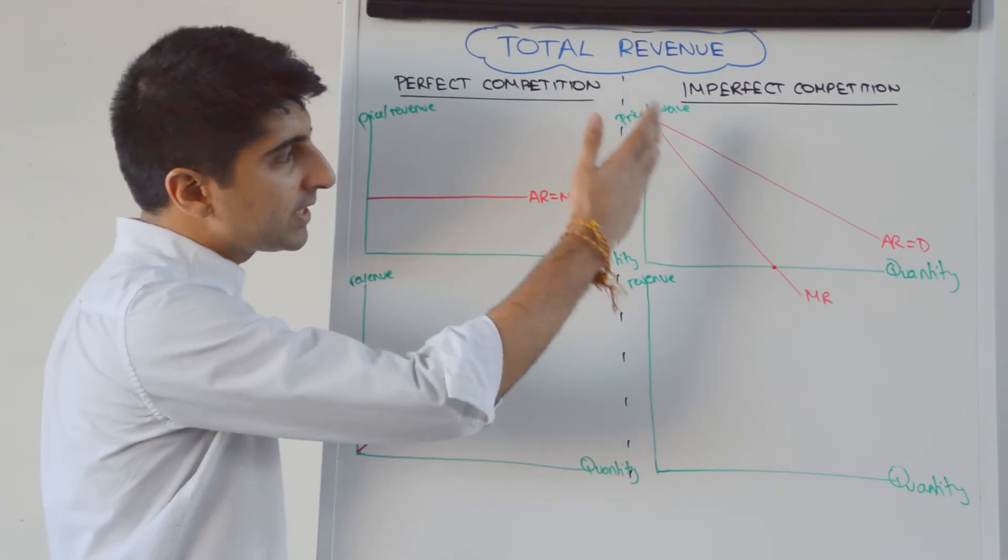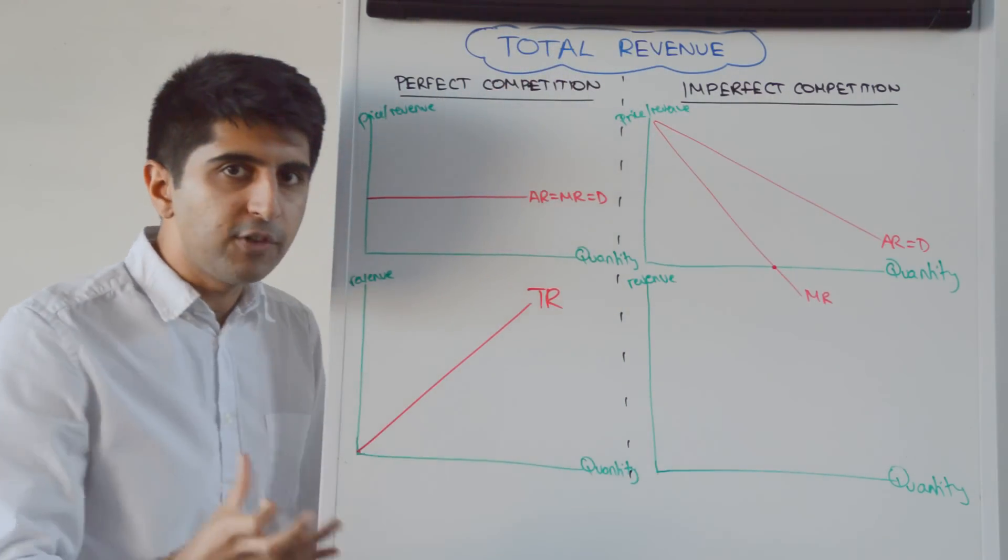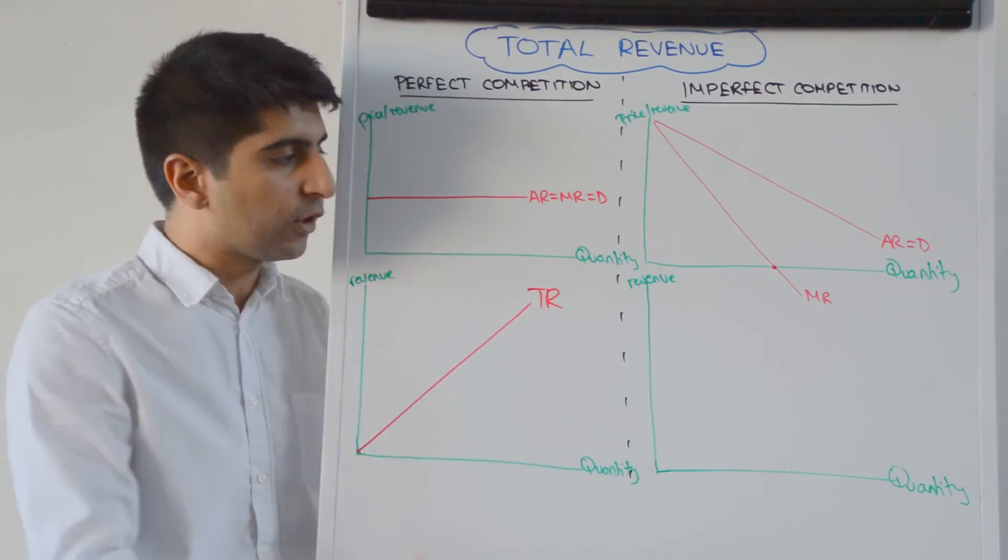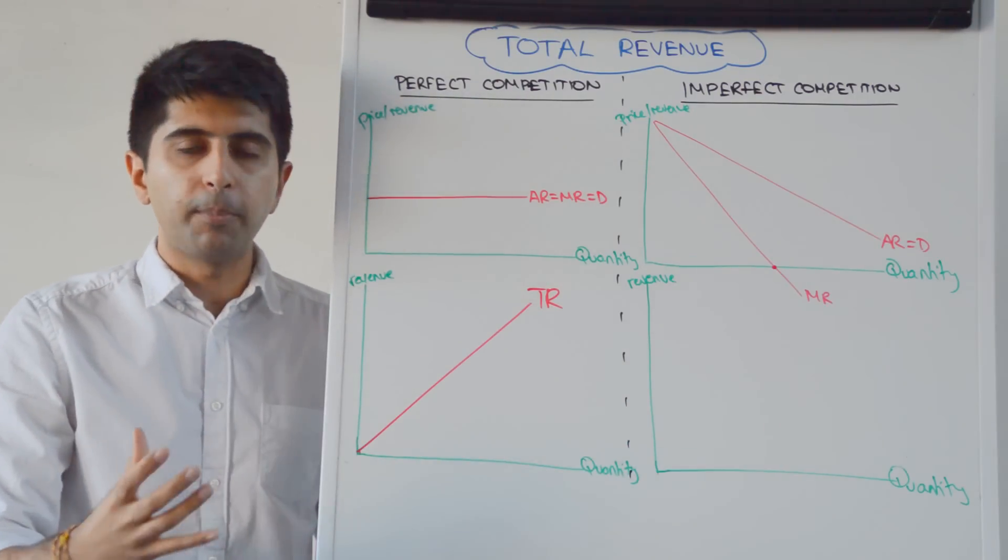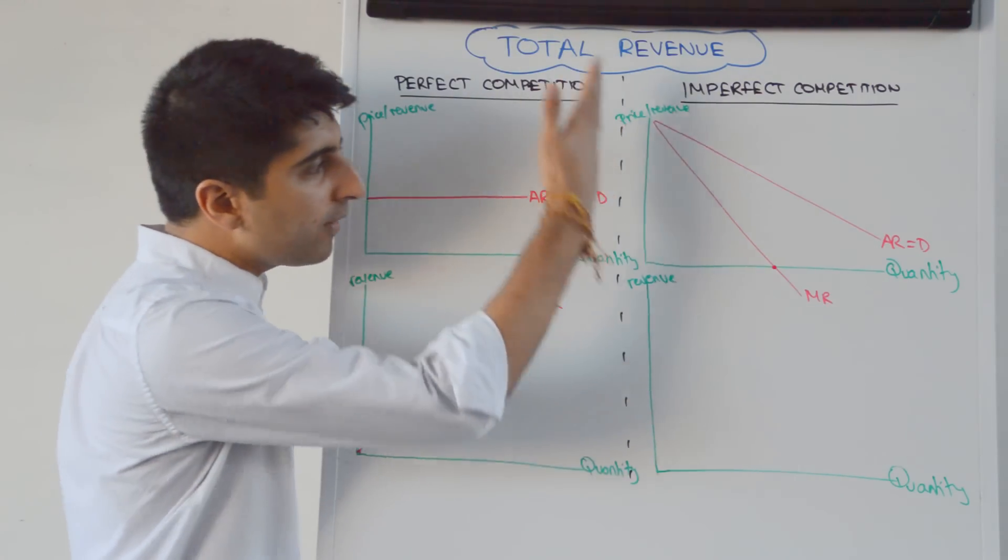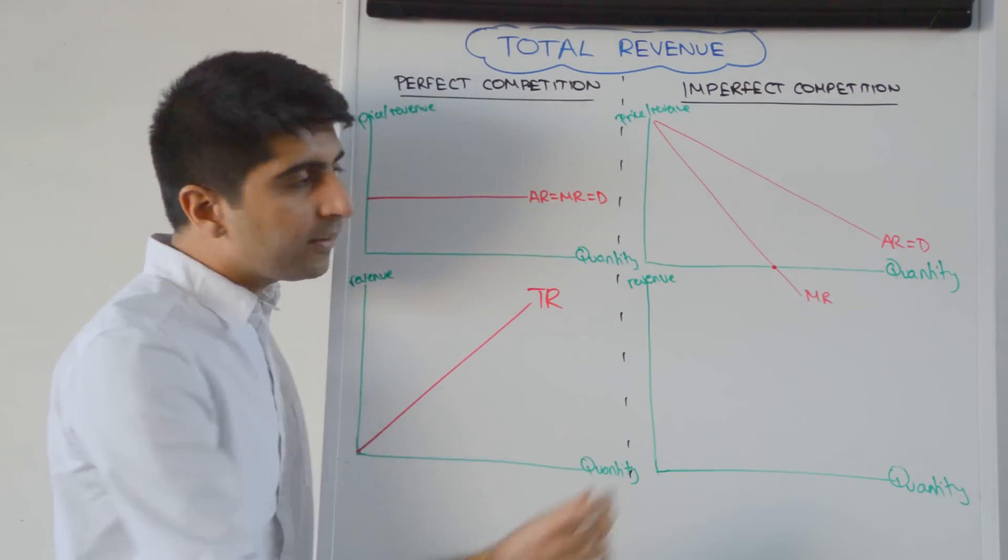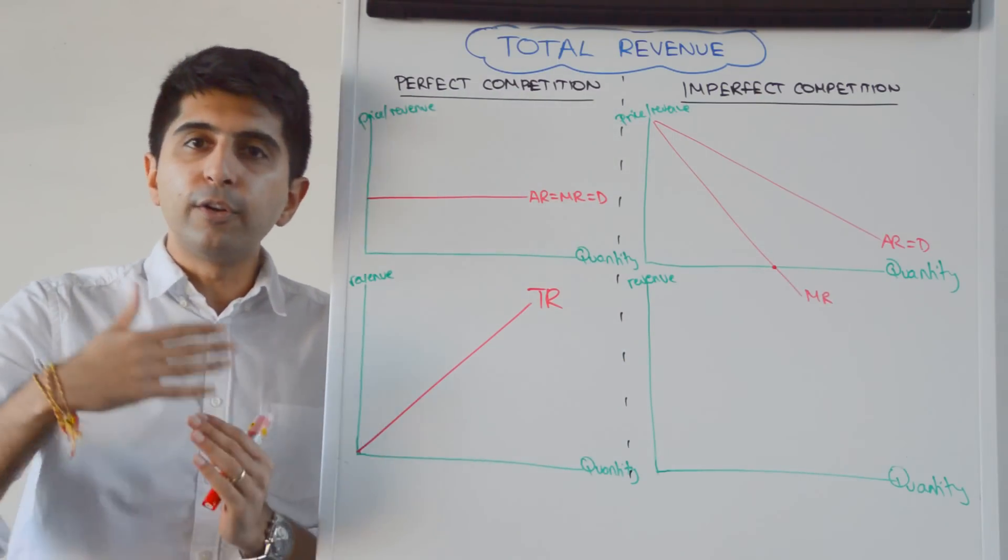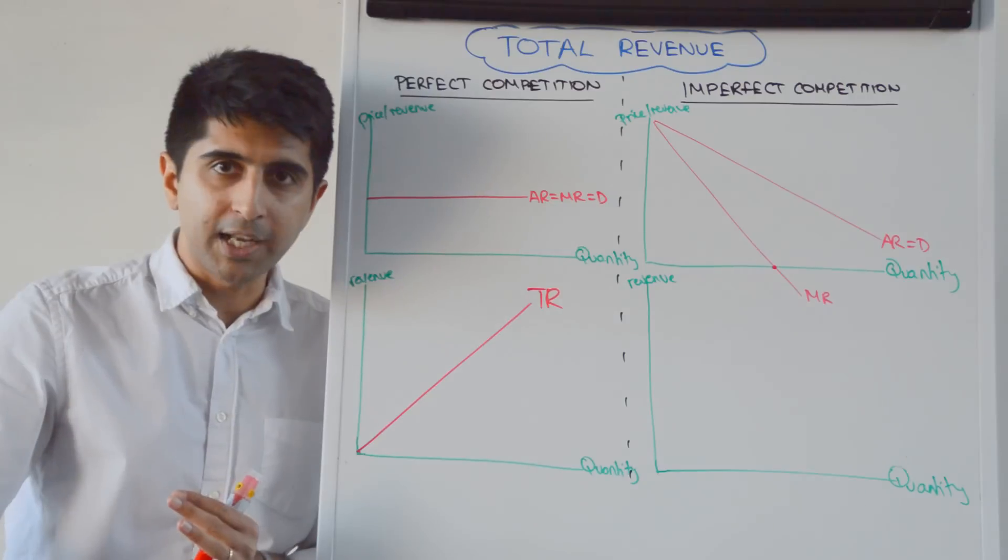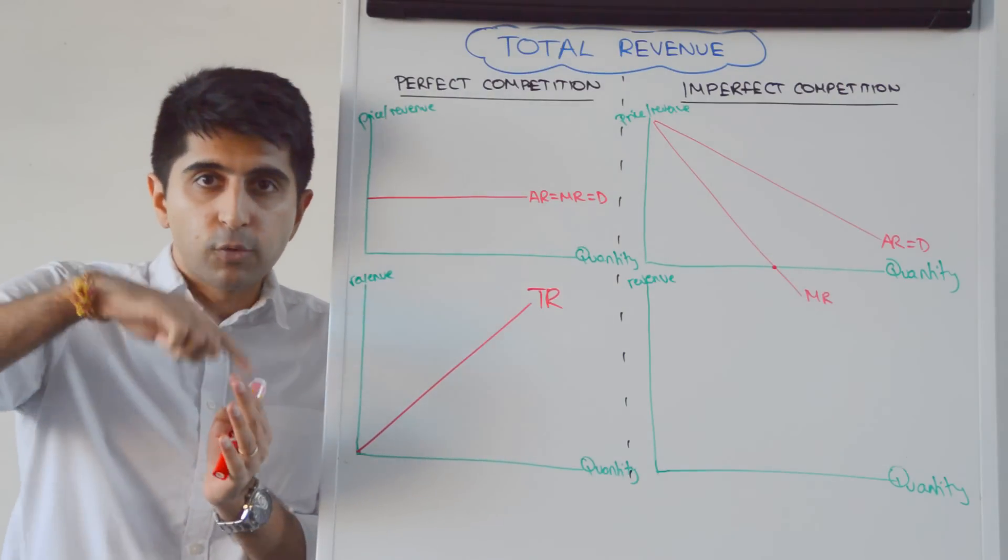So downward sloping like that, what is total revenue going to look like for firms in imperfect competition, therefore? Well, if marginal revenue is decreasing and eventually becomes negative, up until marginal revenue is zero, there is always more total revenue being generated. So the total revenue curve will be increasing.